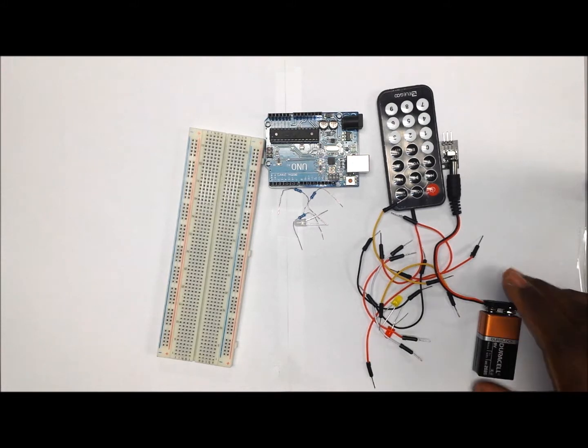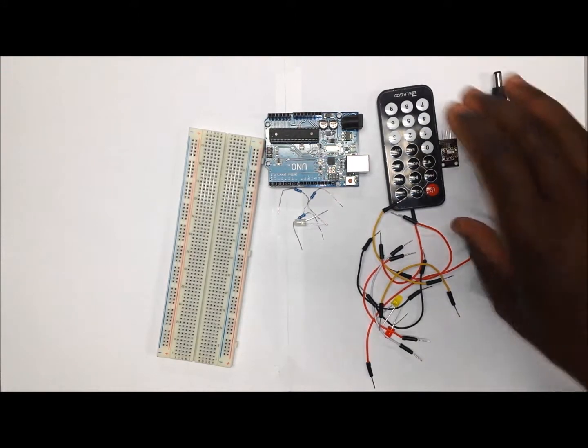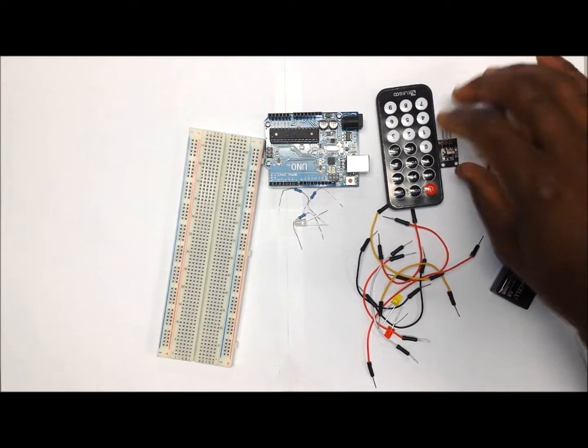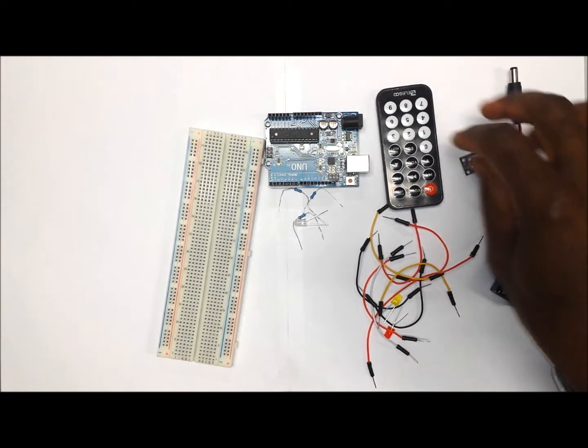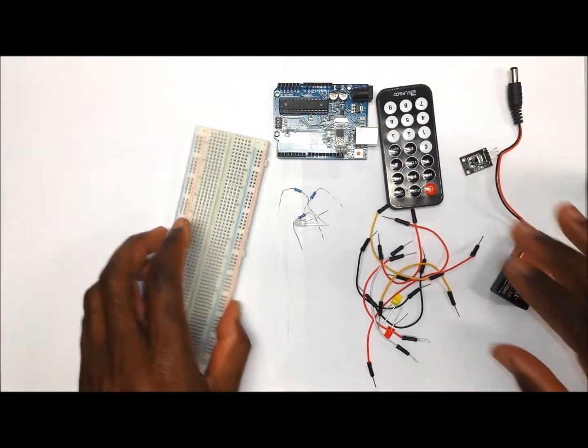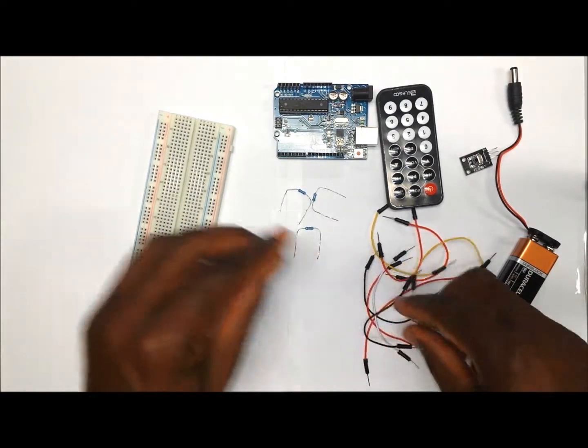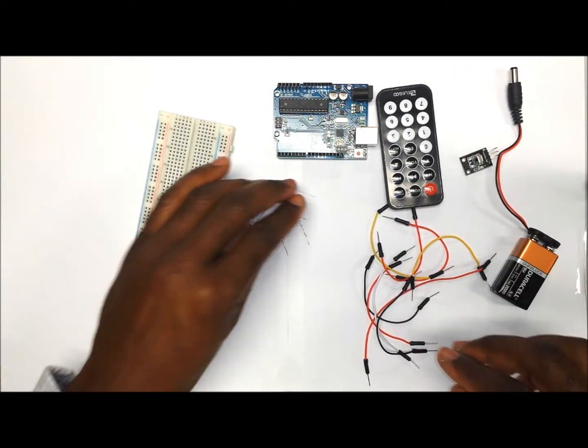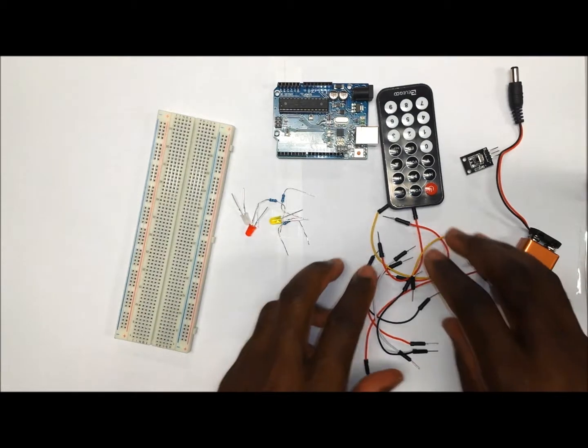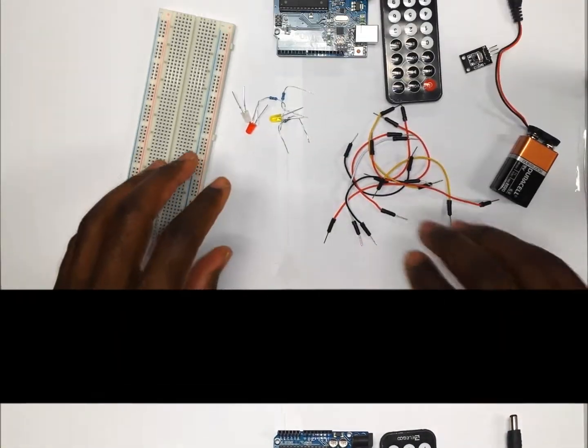For this project you are going to need a power source, a remote control, an IR receiver, Arduino, breadboard, three LED lights, three resistors to work with the LED lights and a couple of jumper wires. Let's get into it now.